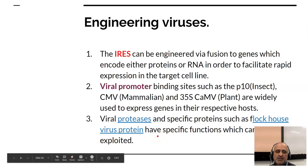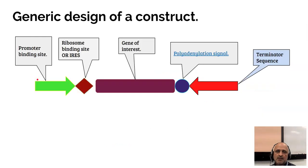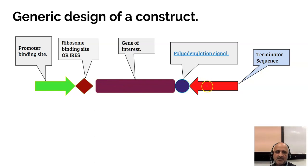Viral proteases and specific proteins such as Flockhouse virus protein have specific functions which can be exploited — viral proteases can be applied to cleave specific proteins and used as diagnostic markers for detection of viruses. This is a generic design of a viral construct: we have the promoter binding site, the ribosome binding site or IRES, the gene of interest, the polyadenylation signal, and the terminator sequence. When this construct is transformed into the host, it will express the gene of interest based on the promoter binding site.